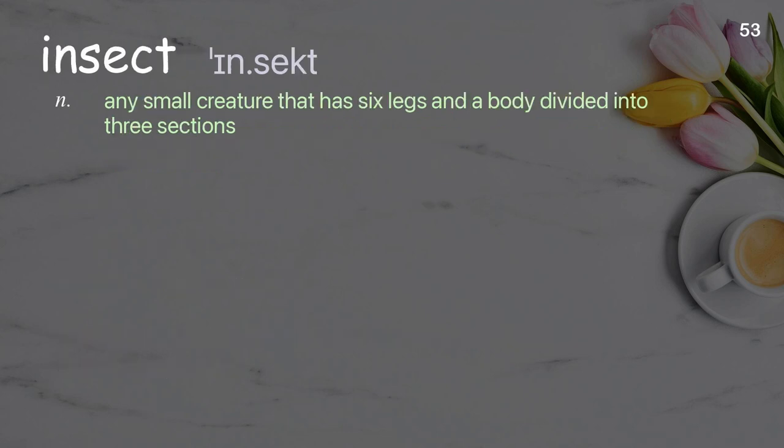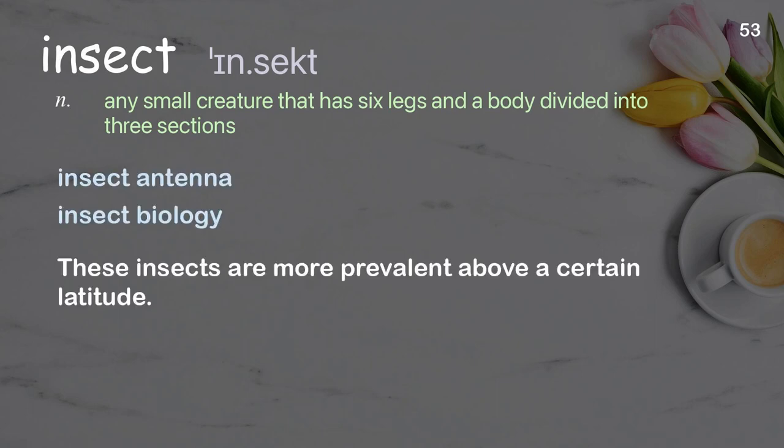Insect: Any small creature that has six legs and a body divided into three sections. Examples: Insect antenna, insect biology. These insects are more prevalent above a certain latitude.